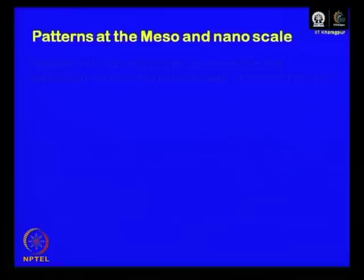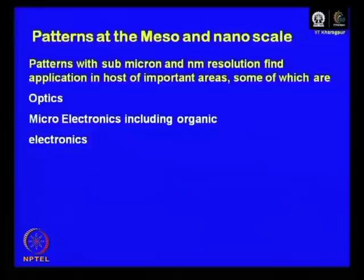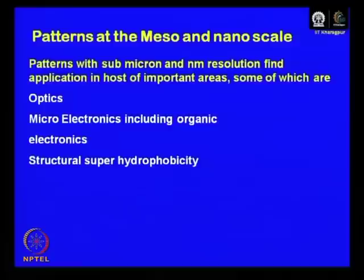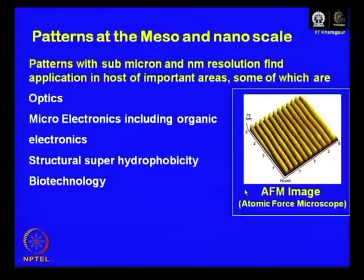Structural superhydrophobicity — the lotus leaf effect — is one application area. We will be talking about structures like this: the scale bar here is 10 microns and the lines are around 700 to 800 nanometers wide, separated by similar distances. These types of images you will see a lot in this course — this is an AFM image, an atomic force microscope image. Just to give you a comparison about the length scale: a human hair is about 50 microns, which is roughly 50 times thicker than each of these lines.